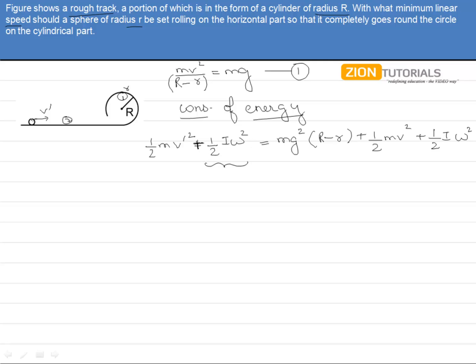Now why have we taken this ½Iω² into consideration? While at the initial position, there will be some friction acting when there is no omega. So we are considering when this has v' velocity and it is rotating with angular velocity ω so that no friction acts over it. That is why we have taken this rotational energy as well.